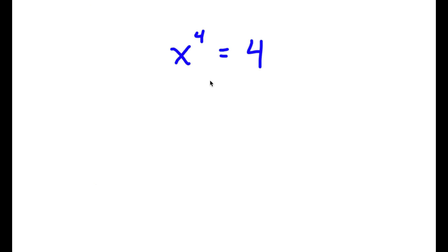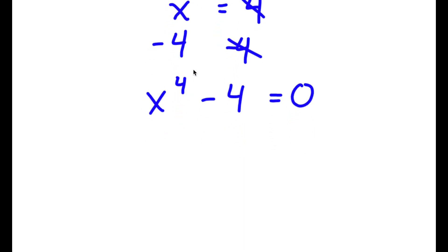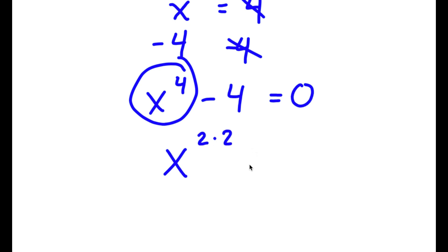In this problem I have x to the power of 4 is equal to 4. To solve this I'm going to first subtract 4 from both sides, so I get x to the power of 4 minus 4 equals 0. I can rewrite x to the power of 4 as x squared squared, and the 4 as 2 squared, giving x squared squared minus 2 squared equals 0.